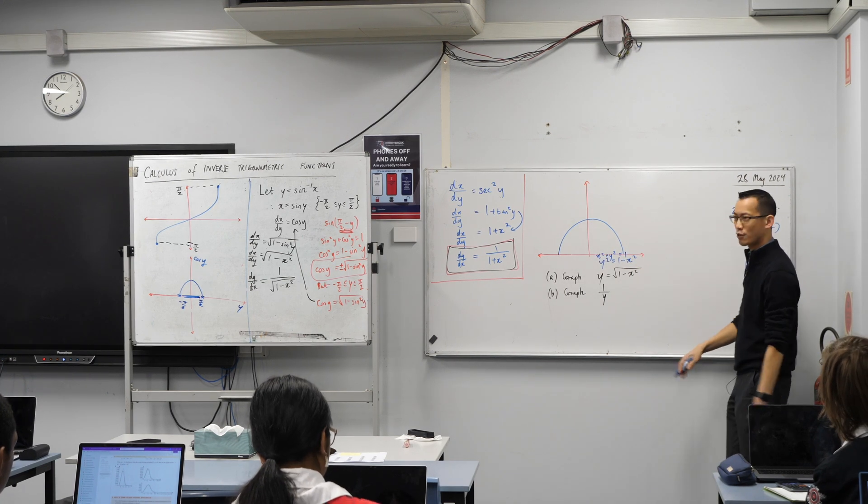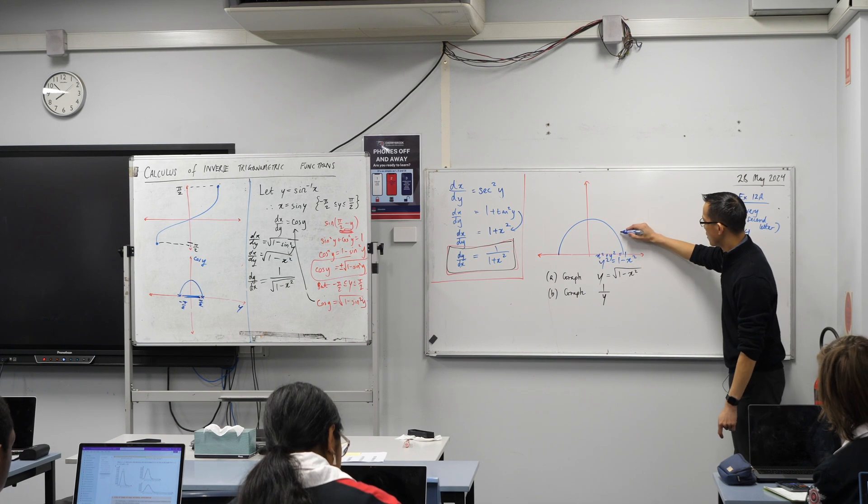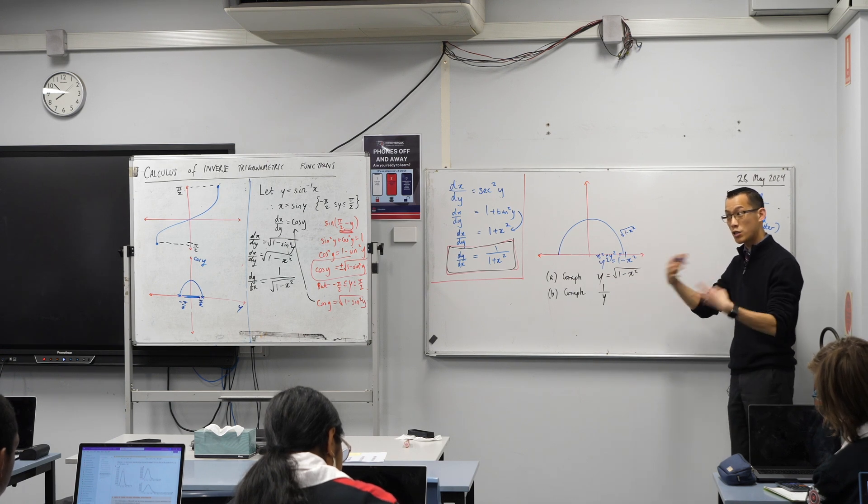Are you happy? I mean, it's not my greatest semicircle, but it'll do. So this is the square root of 1 minus x squared. And now we want the reciprocal of this.